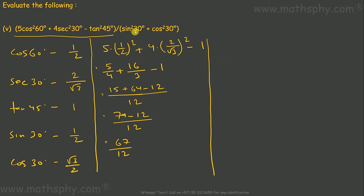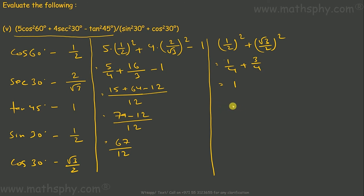For the denominator: sin squared 30 is (1 over 2) squared equals 1 over 4, and cos squared 30 is (root 3 over 2) squared equals 3 over 4. So 1 over 4 plus 3 over 4 equals 1. Therefore the full expression is 67 over 12 divided by 1, which equals 67 over 12. The answer is 67/12.